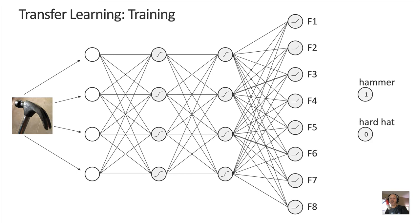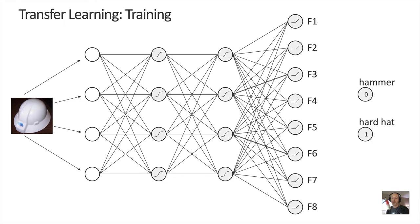Here's the trick: we can use those features to classify objects the original network wasn't even trained on. Suppose we want a new model to identify hammers and hard hats. We pass an image of a hammer through and collect the features on the right — eight data vectors, one for each feature, and a binary indicator of the object type: zero or one. We repeat that for several different pictures of a hammer, then do the same with pictures of a hard hat.